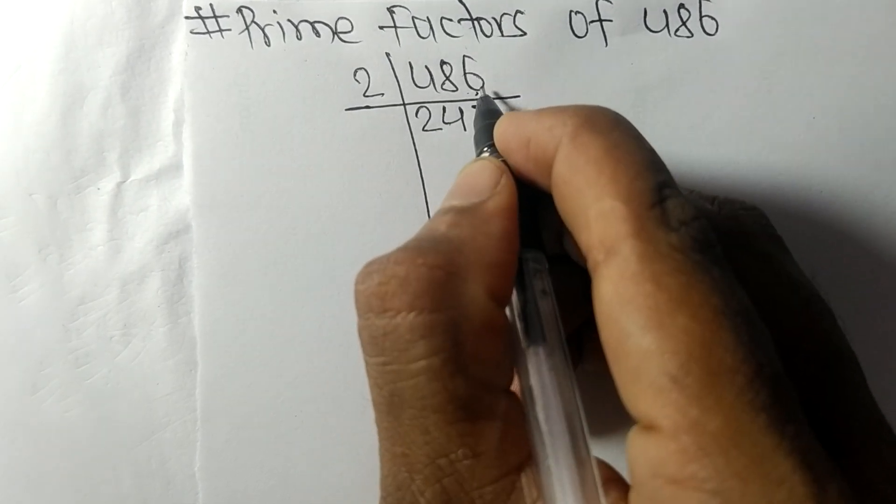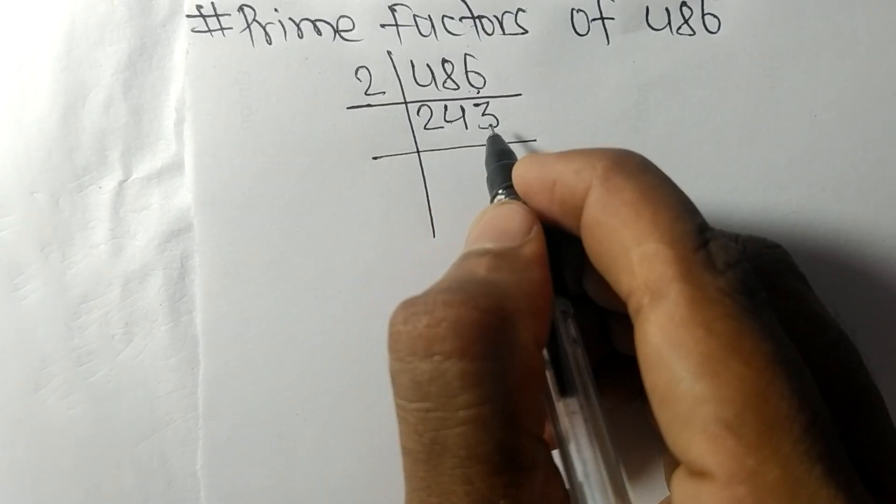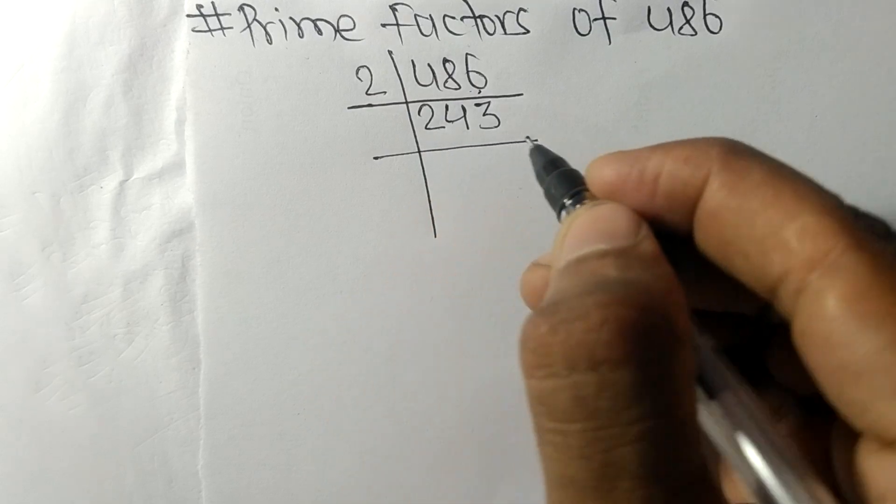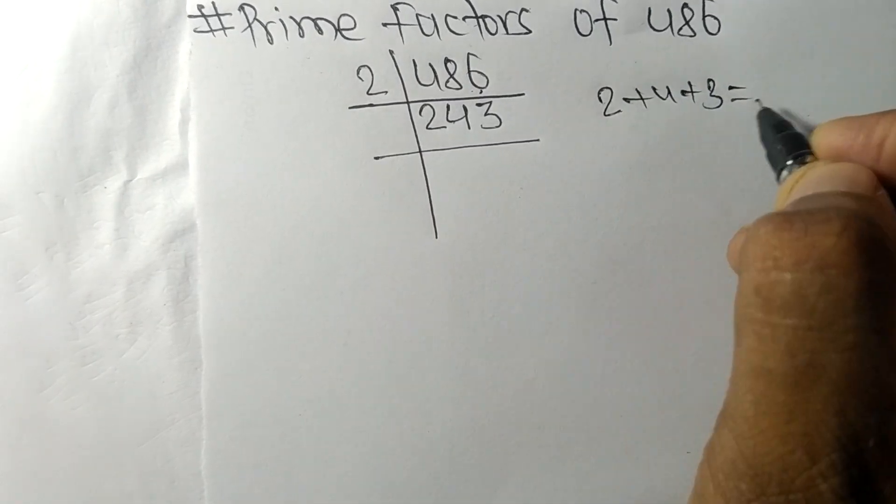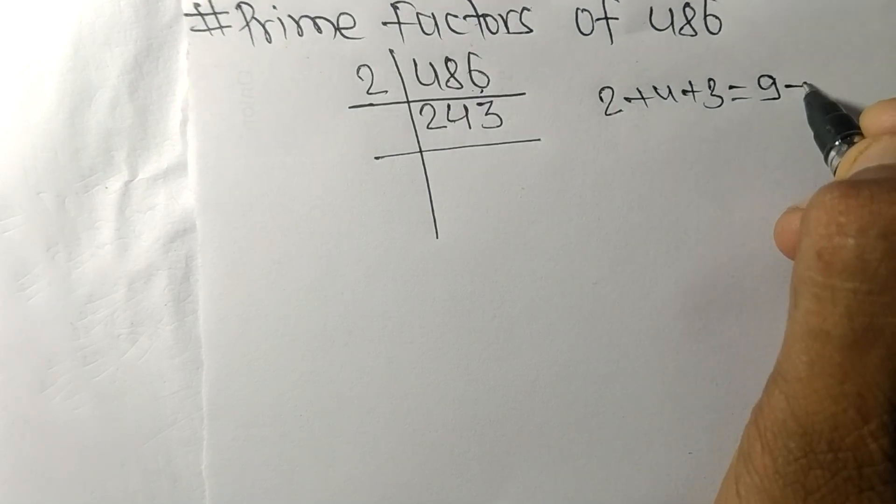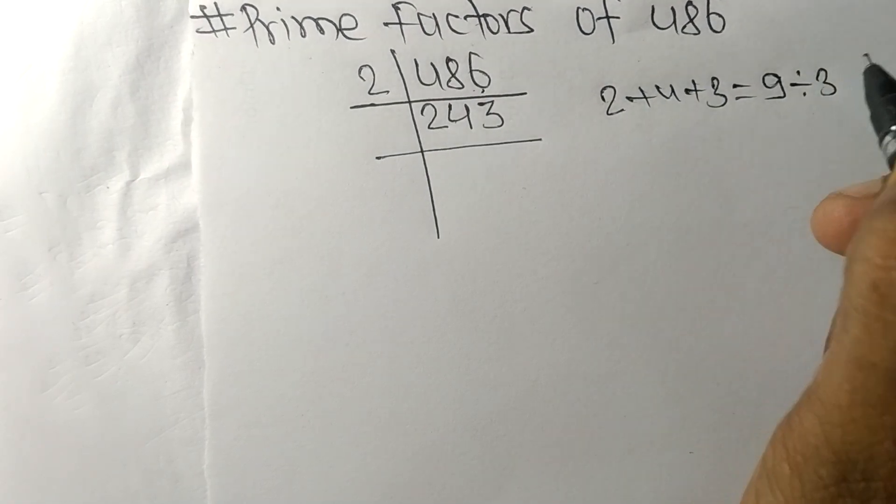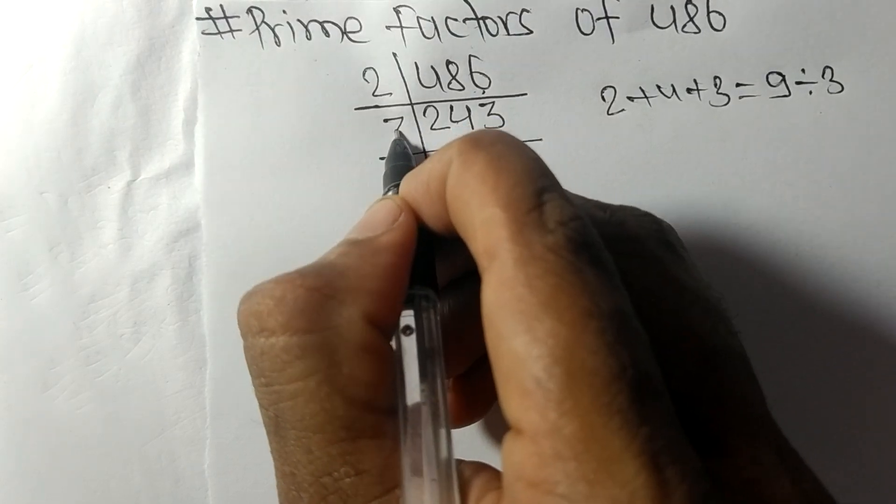So now we got 243. And when we add all these numbers, that is 2 plus 4 plus 3, then we get 9, and 9 is exactly divisible by 3, so 243 is also divisible by 3.